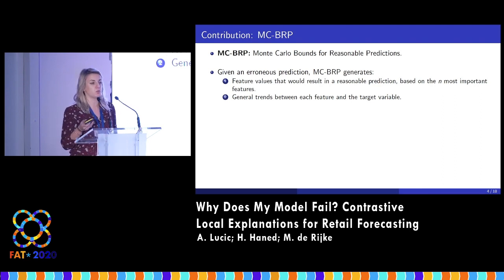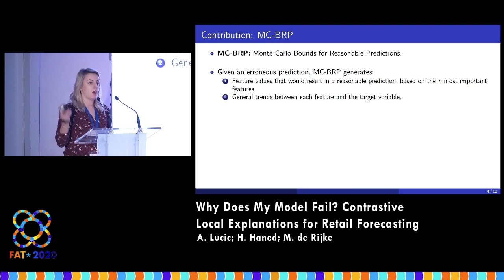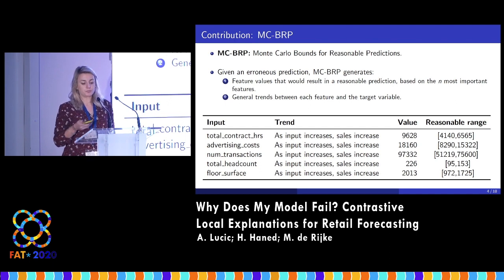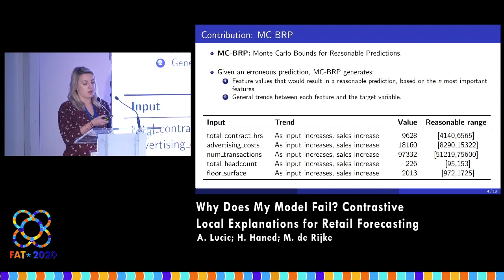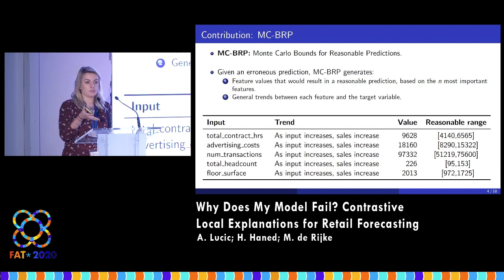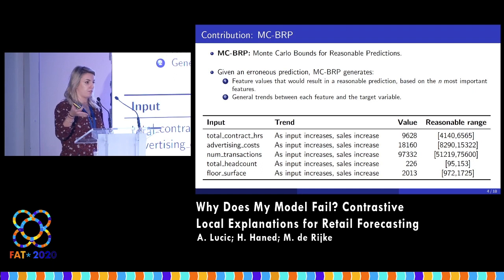We also offer general trends between each feature and the target variable, so users can understand how they would need to manipulate the input in order to change the output. This is an example of our explanation for a retail forecasting task — predicting sales of a particular store. The first column shows the various features, then we have the trend. As total contract hours increase, the sales of the store increase. We have the feature values in the third column, and the range these features need to be in for a reasonable prediction. Here, all the values are outside of this reasonable range, which results in an erroneous prediction.